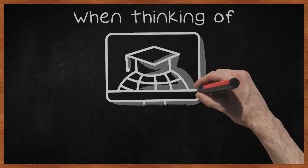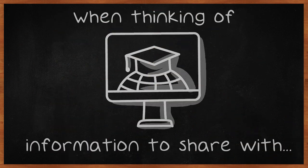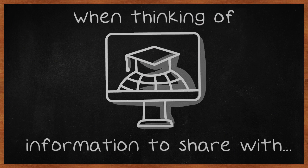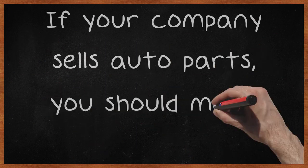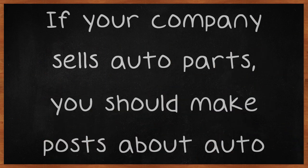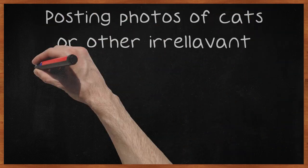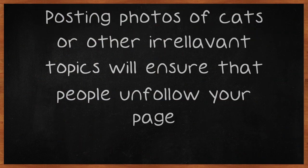When thinking of information to share with your followers on Facebook, try to keep them relevant to what is going on with your business or industry. If your company sells auto parts, you should make posts about auto parts. Posting photos of cats or other irrelevant topics will ensure that people unfollow your page.